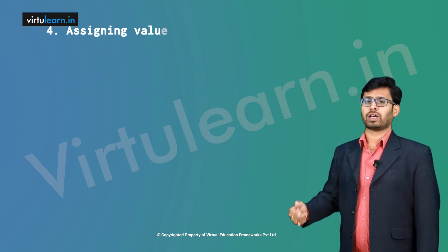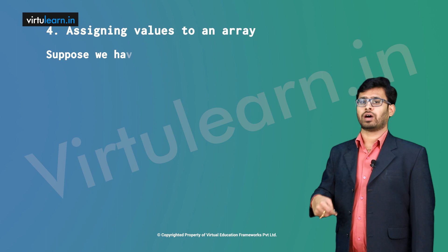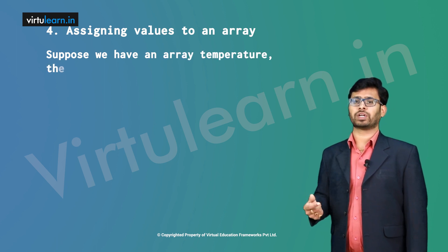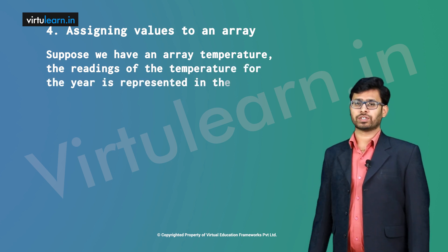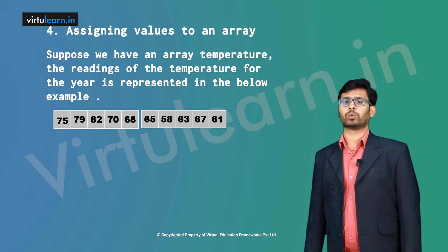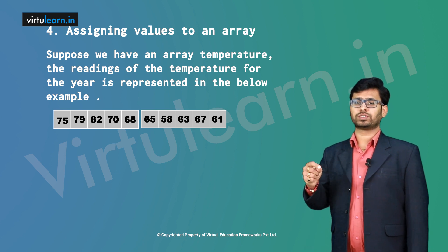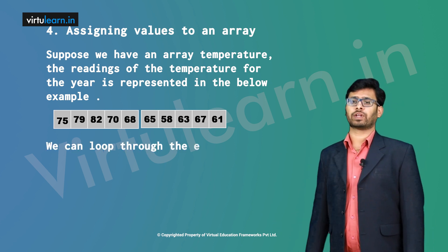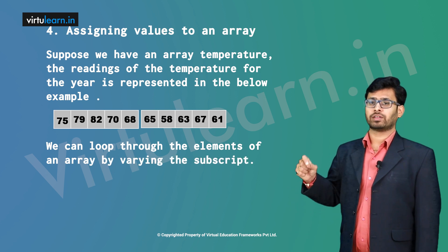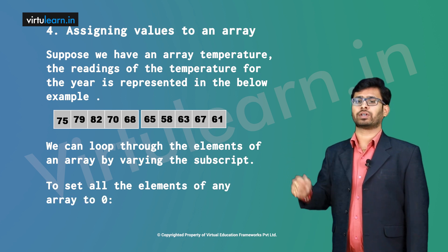To assign values to an array, suppose we have an array called temperature representing readings for a year. You can write the temperatures as: {75, 79, 82, 70, 68, 65, 58, 63, 67, 61}. You can implement multiple such values and extract them from a particular index position. We can loop through the elements of an array by verifying the subscript — for example, temperatures[i] — to set all the elements of the array.